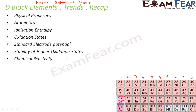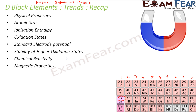Then we have the magnetic properties. Transition metals are generally paramagnetic because of the presence of unpaired electrons. Their magnetic moment is defined by μ = √(n(n+2)) Bohr magnetons. Some are diamagnetic — for example, zinc is diamagnetic and Cu⁺ is diamagnetic — but most of these are paramagnetic because of unpaired electrons.